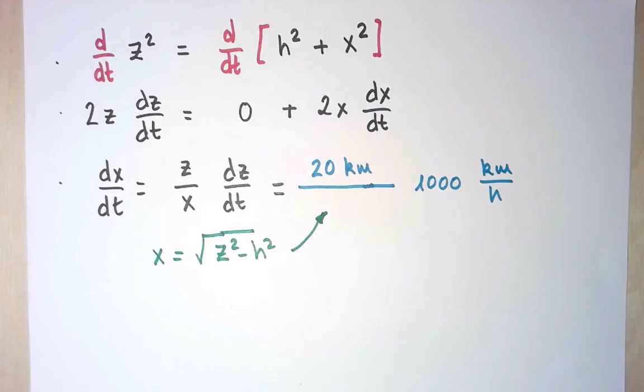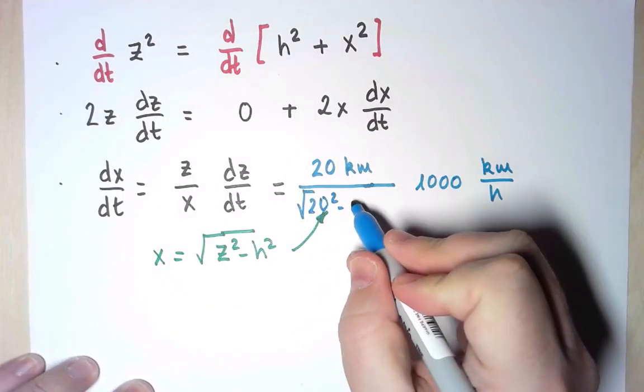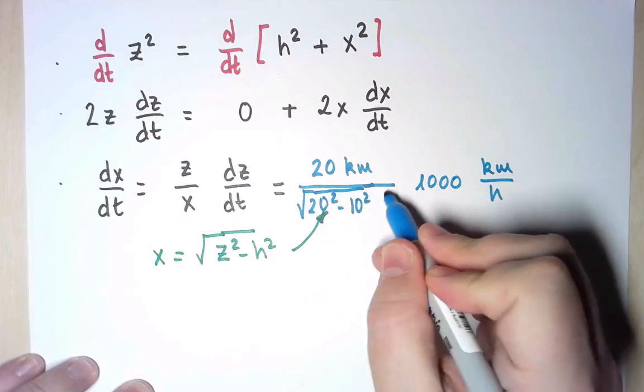And I get that at this time, x is the square root of 20 squared minus 10 squared, also kilometers.